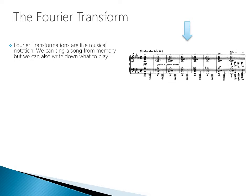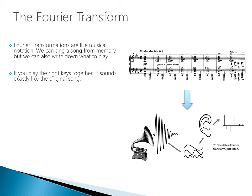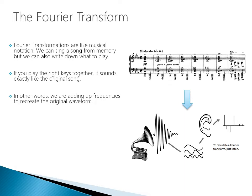Fourier transformations are like musical notation. We can sing a song from memory, but we can also write down what to play — if you play the right keys together, it sounds exactly like the original song. We are adding up frequencies to recreate the original waveform. Musical notation is what you might call a time-resolved Fourier transform: you create slices in time, and at each time step you specify the frequency spectrum, in this case the chords.